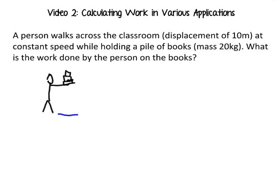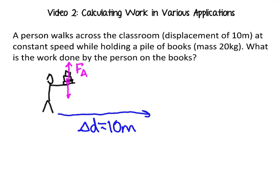They cover a displacement of 10 meters — so that's their delta D, it's 10 meters — and they're holding these books up. So there'll be an applied force they're exerting upwards on the books. The books would also feel a force of gravity. If I draw a little free-body diagram of the books, those would be the two forces they feel.